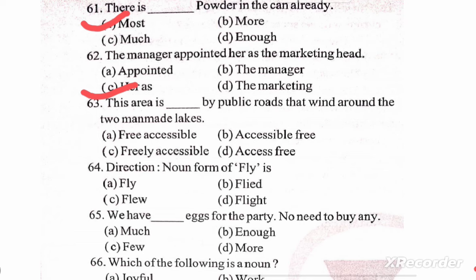There is blank space by public roads that went around the two man-made lakes. Options: A) free accessible, B) accessible free, C) freely accessible, D) access free. The correct option is C — freely accessible.